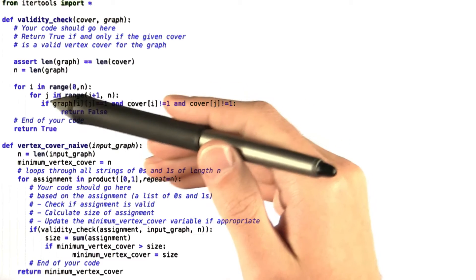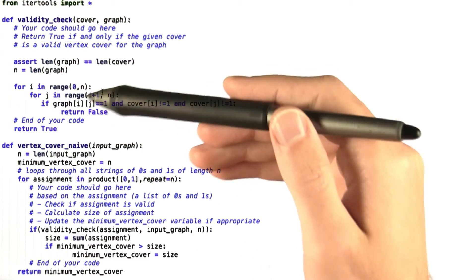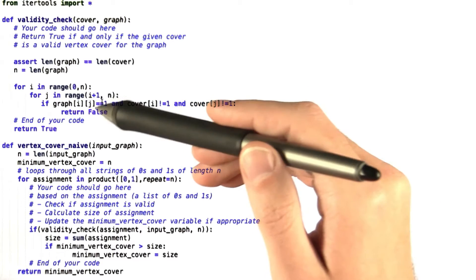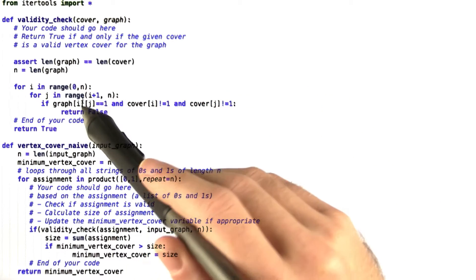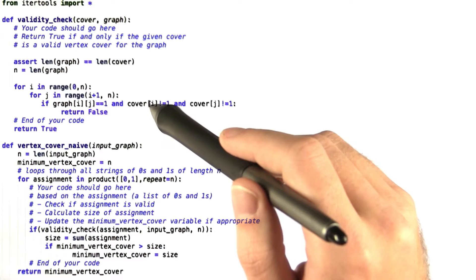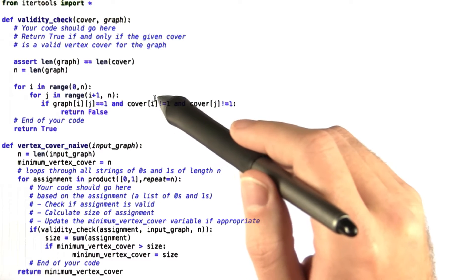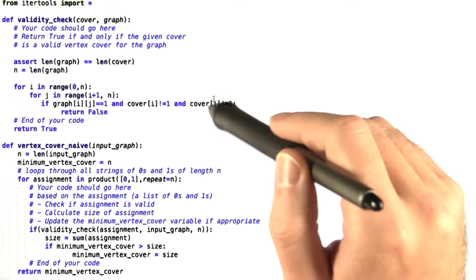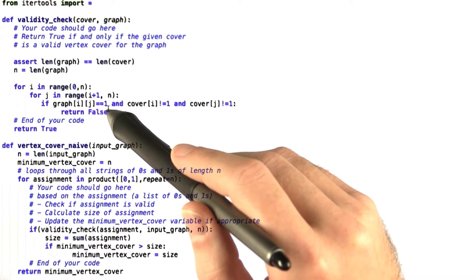Then we go through every element in the adjacency matrix one by one. If that element is set to one, that is there is an edge between those two vertices, and either the first vertex we're checking is not equal to one (that is, it is not part of the vertex cover) or the second vertex isn't, then we return false.